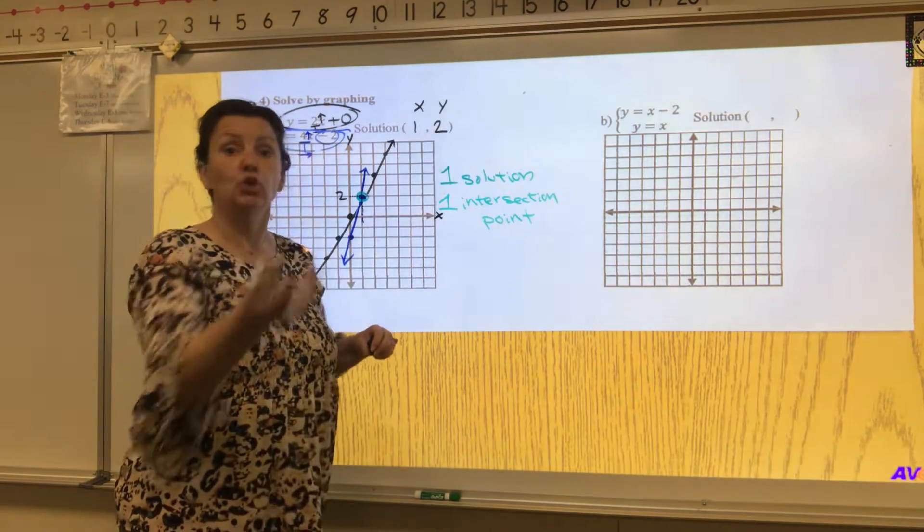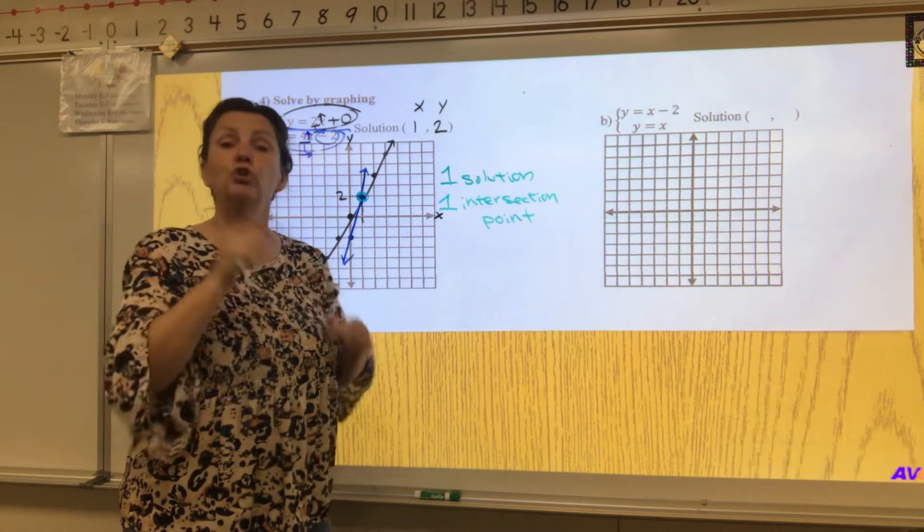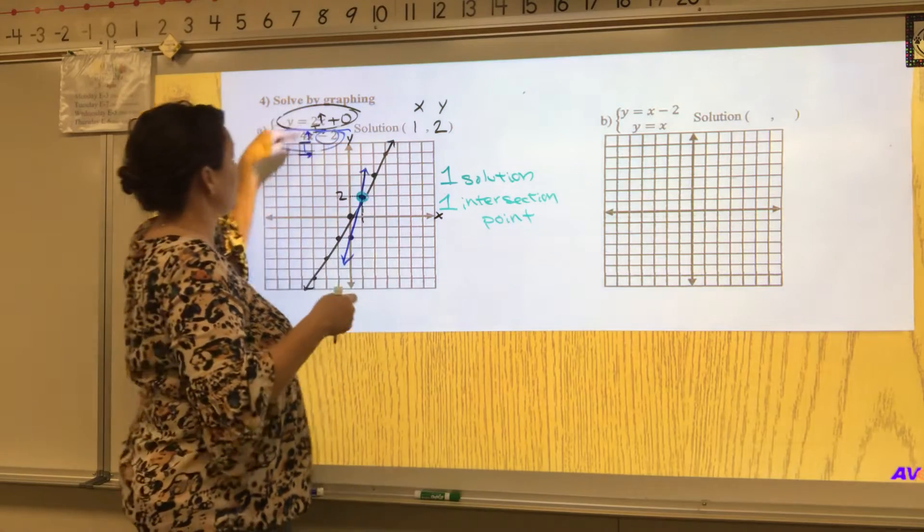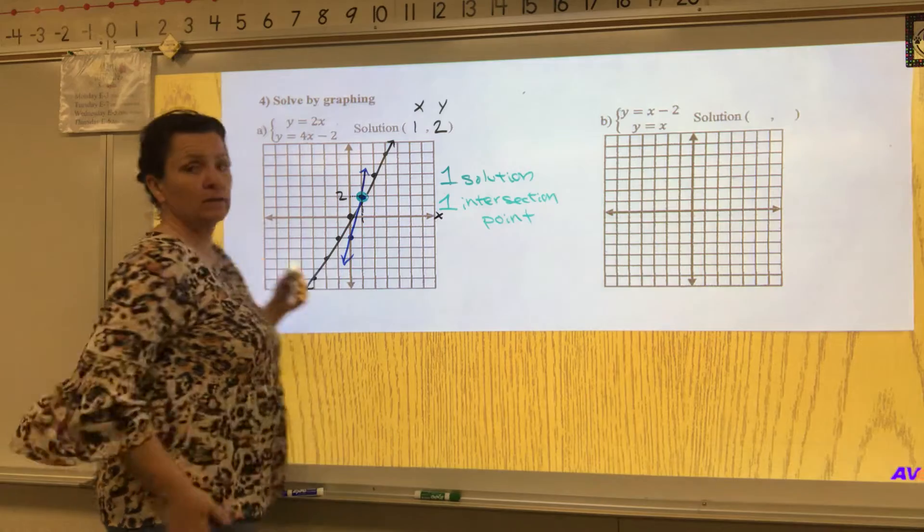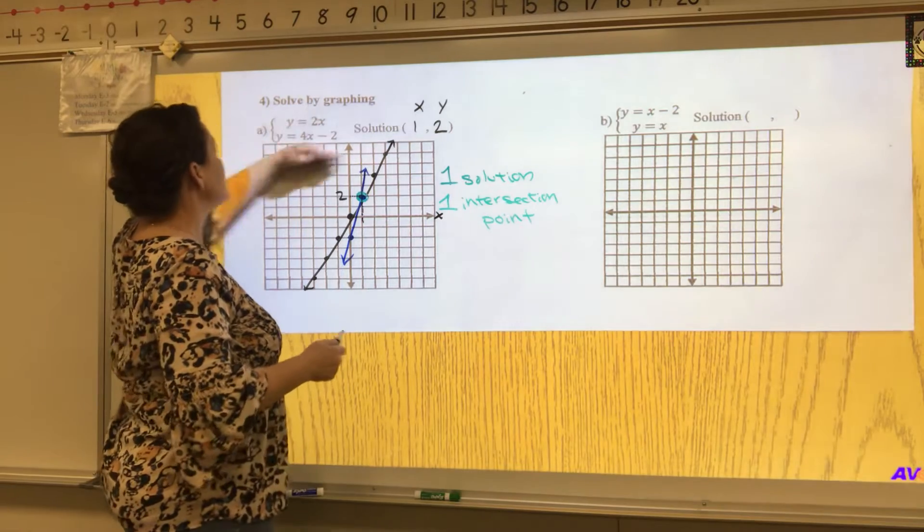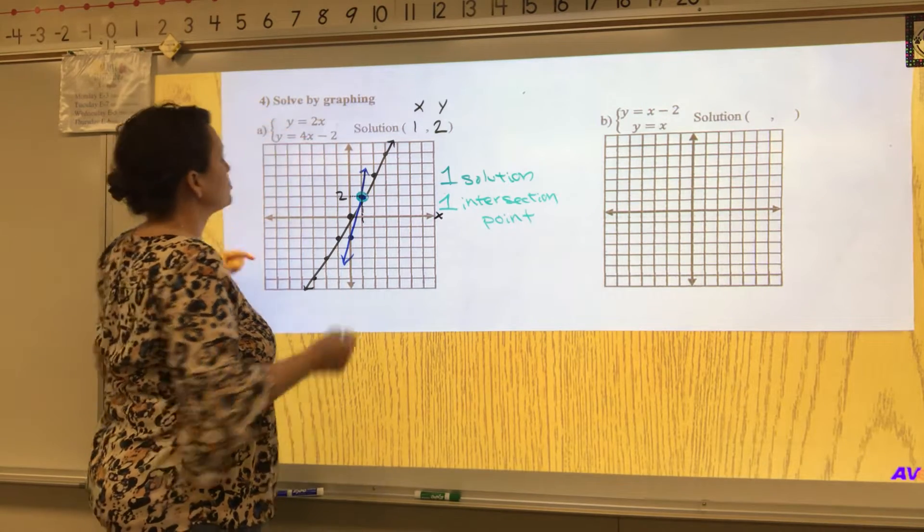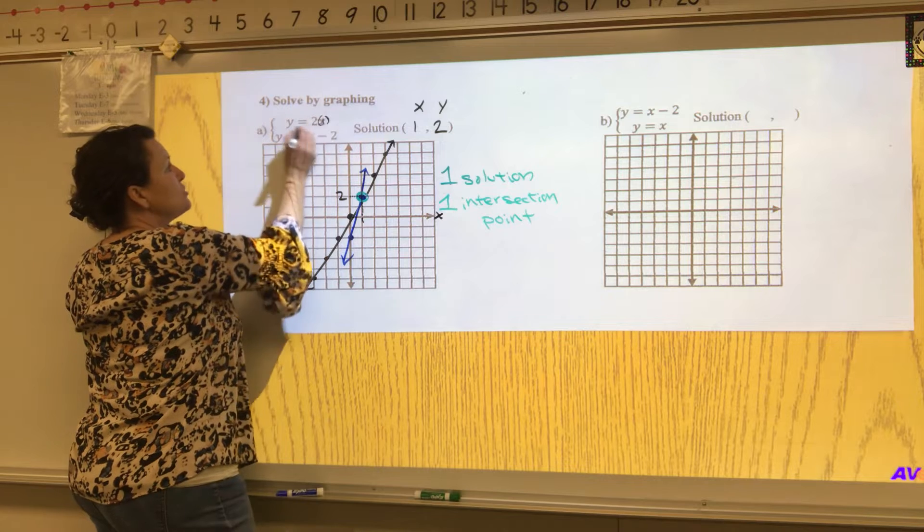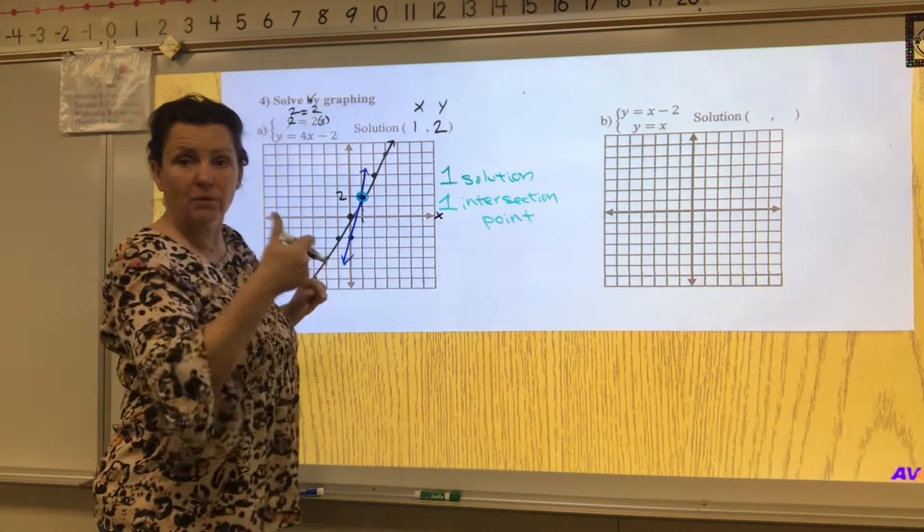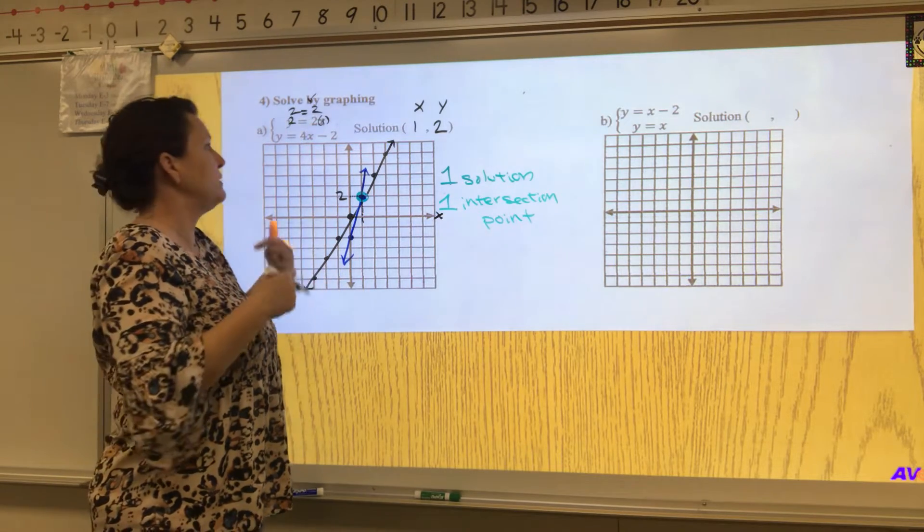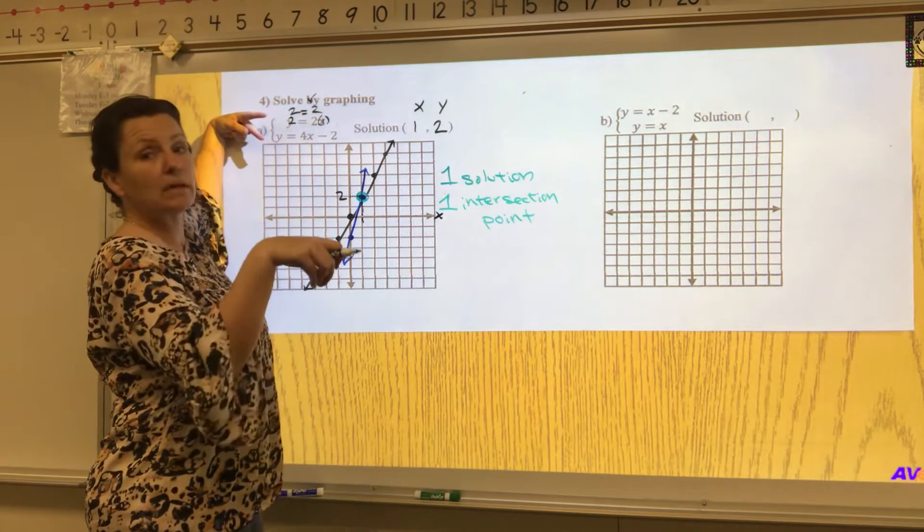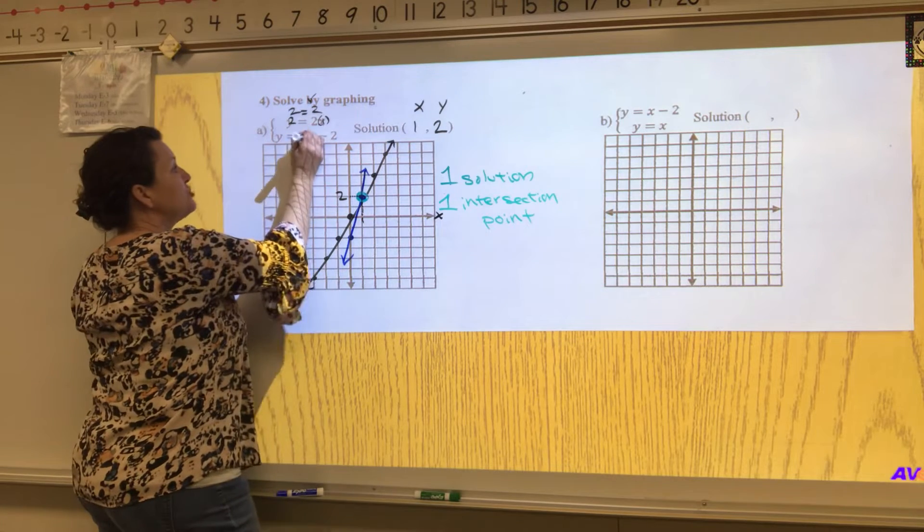But you don't have to believe me, you should plug that in. And if it works for both you know you have the right solution for the system. If that point only worked for one of these, somewhere we made a mistake. This point of x is one, y is two should work for the entire system, that means both equations. So I'm going to try that now. Two times one is two equals two. Well that one checks. I know I'm on the right track, but that's not good enough. That just tells me that point is on that line, but it doesn't tell me about the entire system.